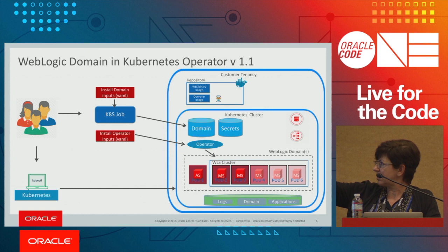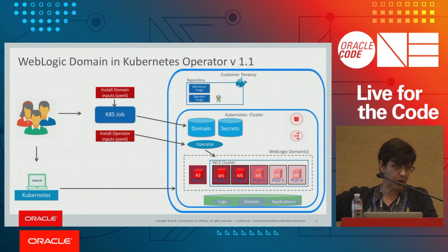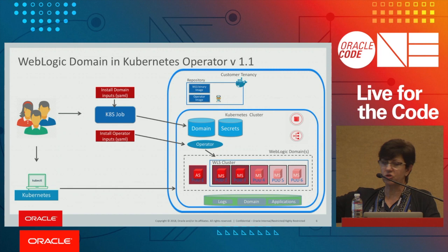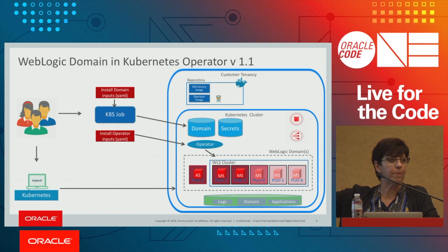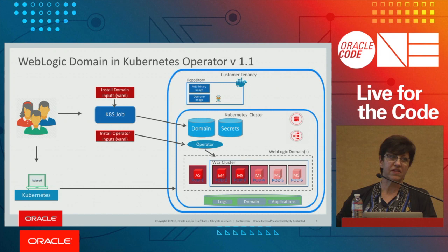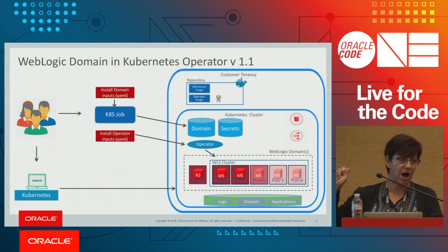If you make changes to the domain resource — for example, specifying that you only want two managed servers started in a cluster of five — the operator reads the replica count and starts two pods with two managed servers. If a user changes the replica count to three using kubectl, the operator sees the change and invokes the right Kubernetes API to start another pod.